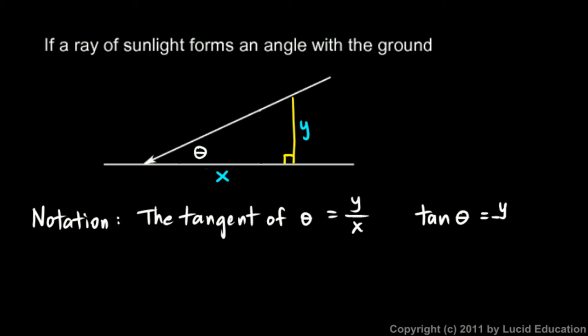So we say tangent theta is y over x and some people when they read this out loud they say tan theta. It's more appropriate to say tangent theta or the tangent of theta. The tangent of that angle is the ratio formed y over x.